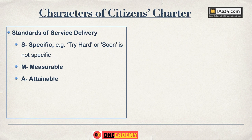A stands for Attainable — whatever is set must be realistic and possible. If goals are not realistic, they will not be attained. For example, if you decide to complete the entire Lakshmikant textbook in one day, it is not possible — it is an unrealistic goal and will also demotivate you. That is why attainable goals must be set.